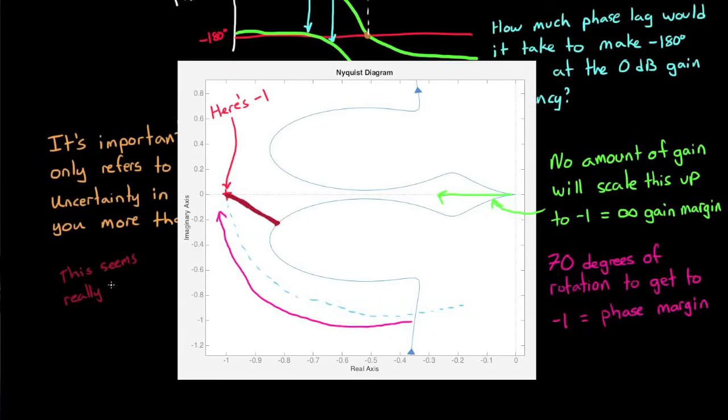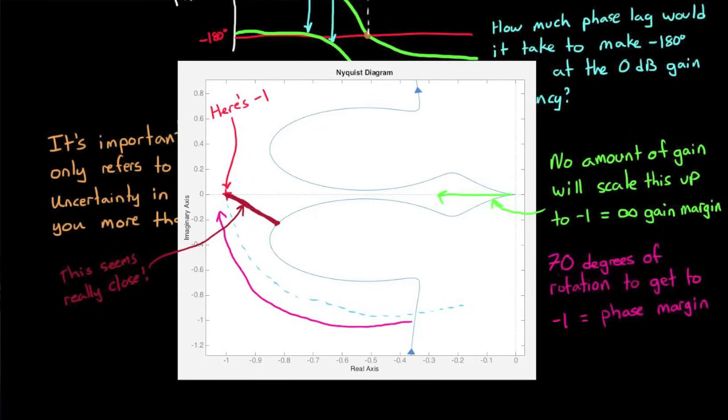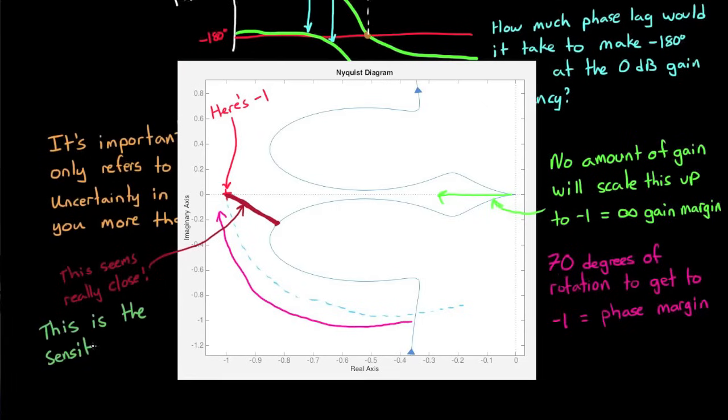So in addition to the gain and phase margin, we could also look at the closest point the curve makes to minus 1 and make some claim that the closer the two are, the less stable the system is. That metric is called the sensitivity of the system. And I'm going to talk about that in the next video.